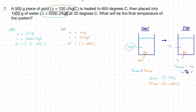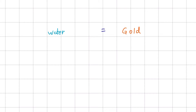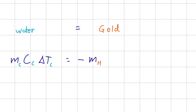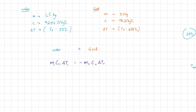Now that we have everything set up, let's look at the formula we're going to use. It's a form of the conservation of energy: energy in the water equals energy in the gold. Specifically, the mass of the cold object times its c value times its delta T equals negative mass of the hotter object times its c value times its delta T.